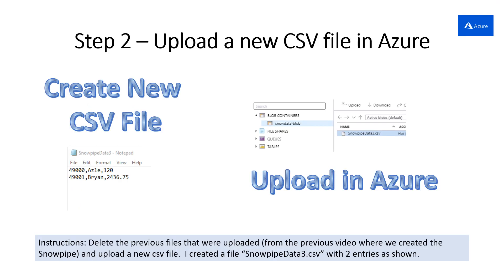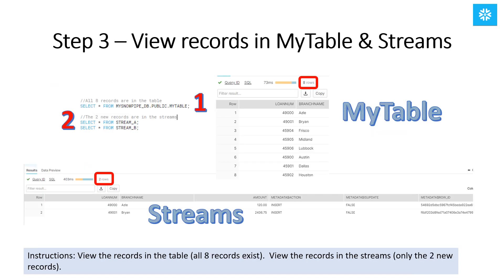In this step, we'll create a new CSV file with two records like we did in the previous video and upload that file in Azure. Now we run a select star on my table, and we see that we now have two more rows for a total of eight records. When we run a select star on each of the streams, we can now see that the two new records that were inserted now appear in the streams.